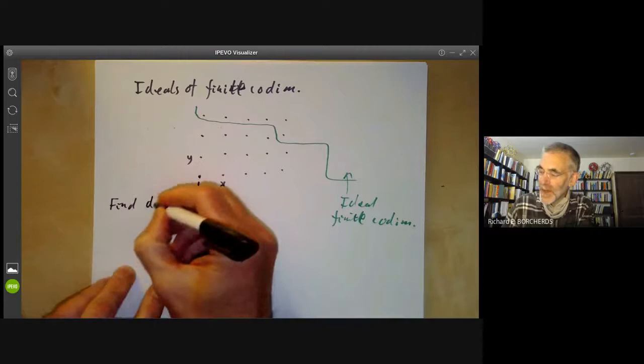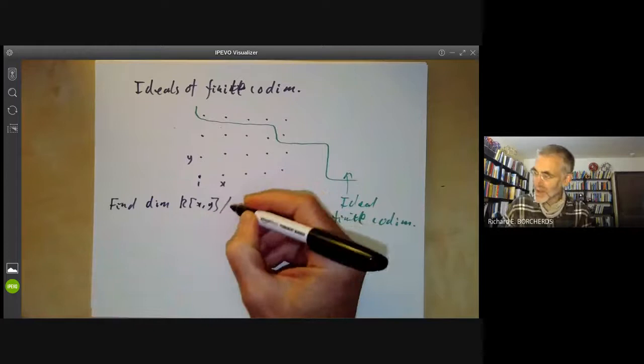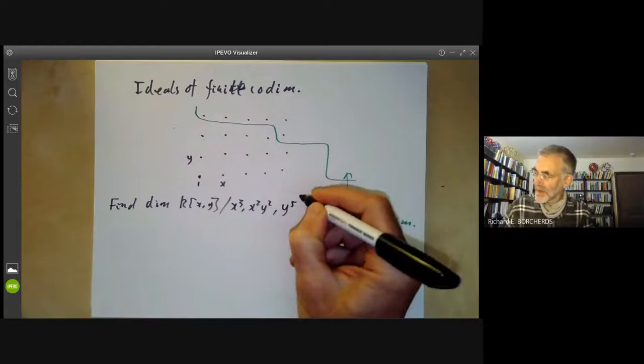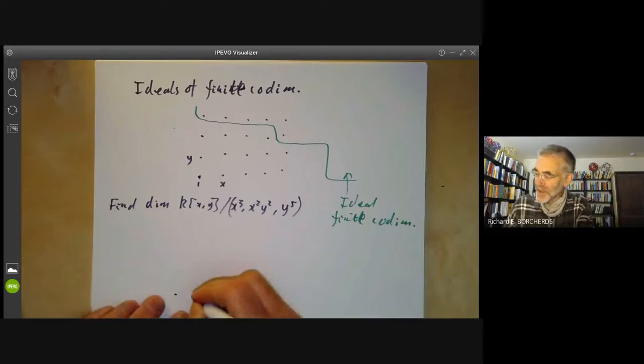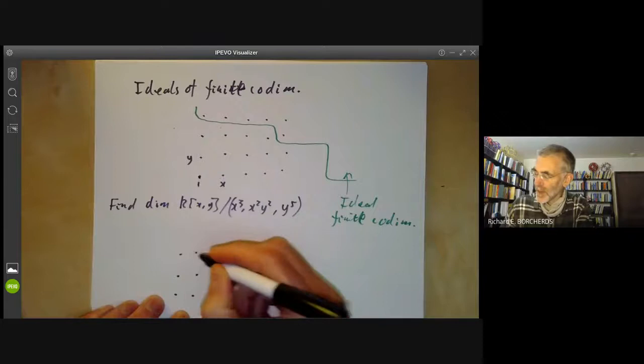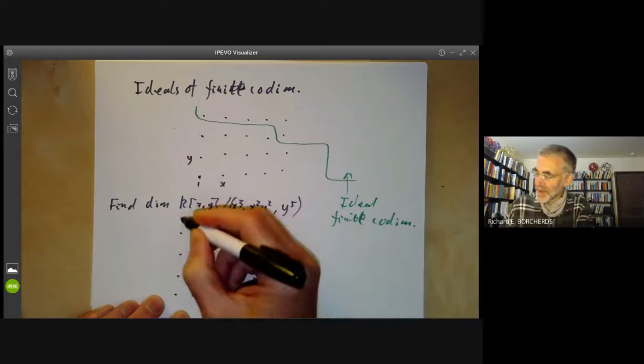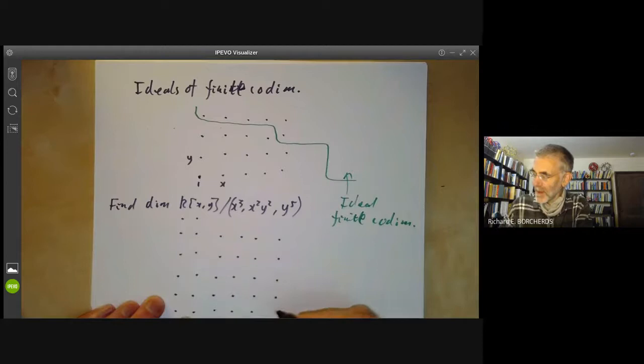Another example: find the dimension of the algebra k[x,y] quotiented by the ideal generated by x cubed, x squared y squared, and y to the fifth. What's the dimension of this algebra? This is incredibly easy if you just draw a picture. We write out the basis elements like this: 1, 2, 3, 4, 5 — I need to go a bit further. So this is going to be 1, here we have y to the fifth, here we have x cubed.